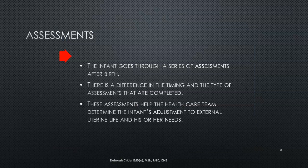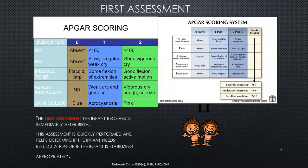The newborn baby is going to undergo several different assessments. There are distinctive things that set them aside from each other — differences in timing and type of assessment completed. These assessments help the healthcare team determine if the baby is adjusting to external uterine life or needs further intervention. The very first assessment is called an APGAR score. It was named after Dr. Virginia Apgar who developed it. It's an acronym standing for Activity, Pulse, Grimace, Appearance, and Respirations.